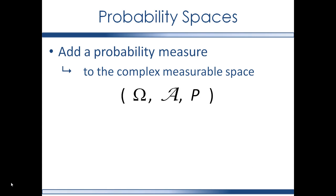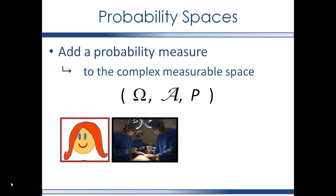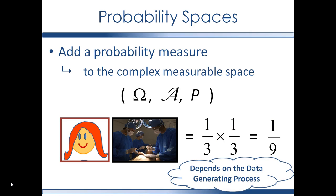Add a probability measure to the complex measurable space and now you have a probability space. In our example of patients and treatment types, you can ask about the probability of getting combinations like women and surgery, or men and pills, or a specific patient and a specific treatment — for example, patient one and surgery, which is one-ninth. If you have equal probability sampling for the patient and random assignment for the treatment, and you multiply those probabilities together, that is called the product measure. It is valid to develop the probability measure of the complex probability space using the product measure.